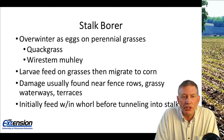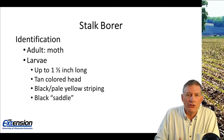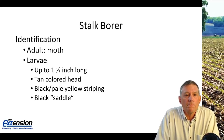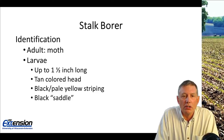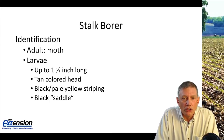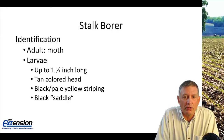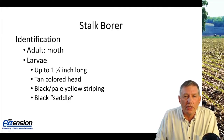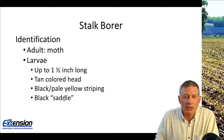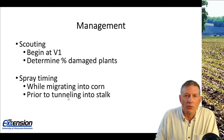Initially, the stalk borer will feed in the whorl and cause a slight scarring on the leaves, and then as they get a little bit bigger, they'll tunnel into the corn stalk. The adult is a moth. The larvae will be maybe up to an inch and a half long, with a tan colored head and black to pale yellow striping throughout the length of the body. But most importantly, common stalk borers will have a black saddle — they are the only insect that I know of that has that black saddle.